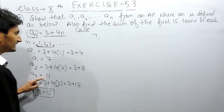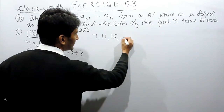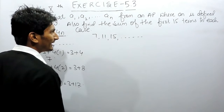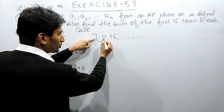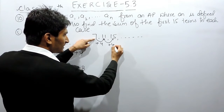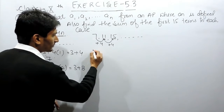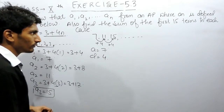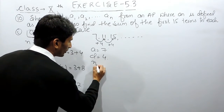Now considering the first value as 7, the second value as 11, and the third value as 15, and these values can be calculated so on. Clearly this series is forming an AP where 7 is the first term and a constant 4 is added to make the second term, and the same constant is added to the second term to get the third term. So here the first term is 7 and the common difference is 4.